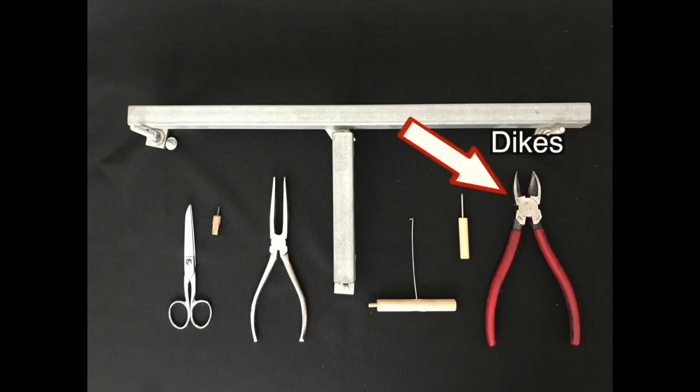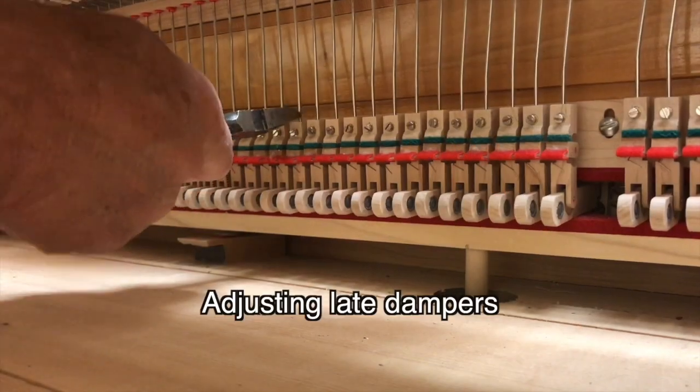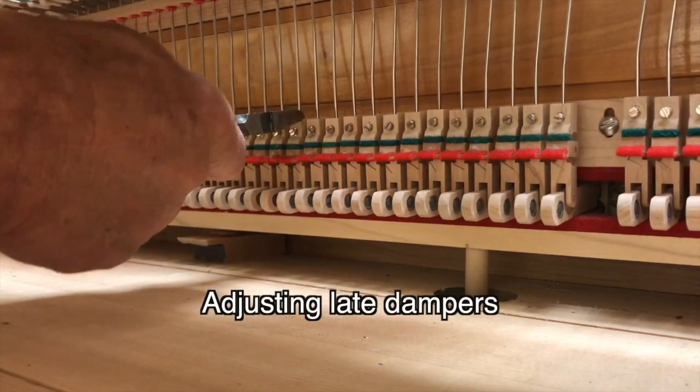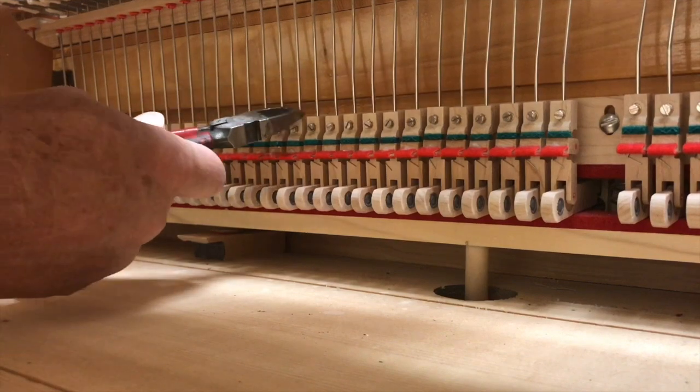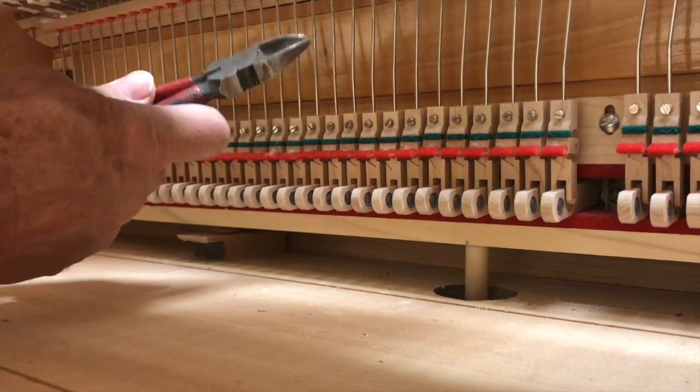Next is a pair of dykes that I use. They're really dull and I use those to raise the wire out of the block for late dampers. It's something I use quite a bit but they're really dull. You can use your duckbill pliers but I like these dykes, they grip the wire better.